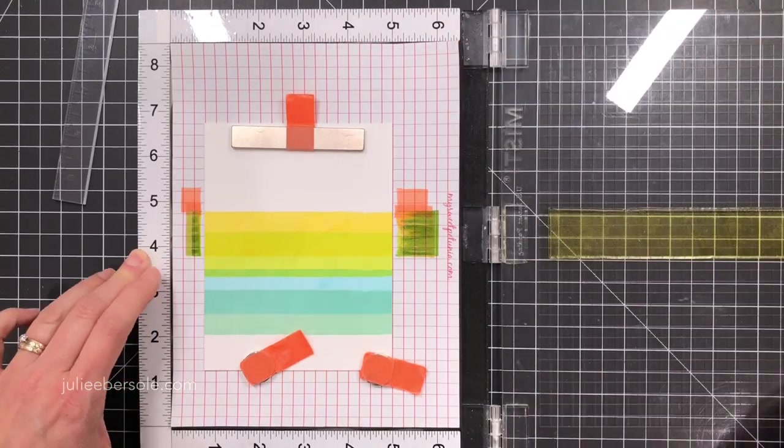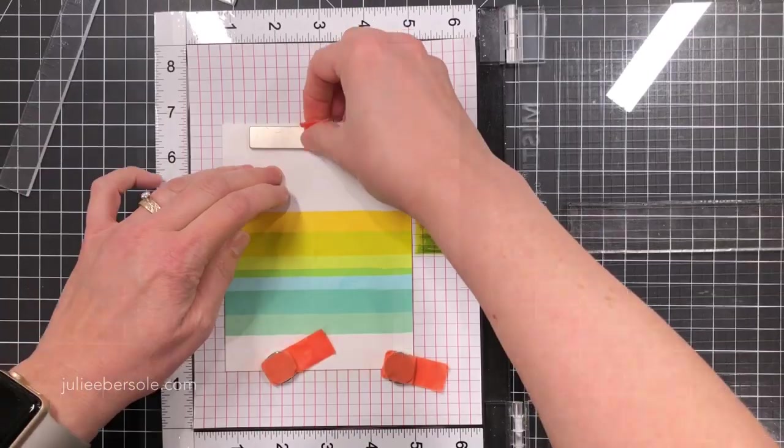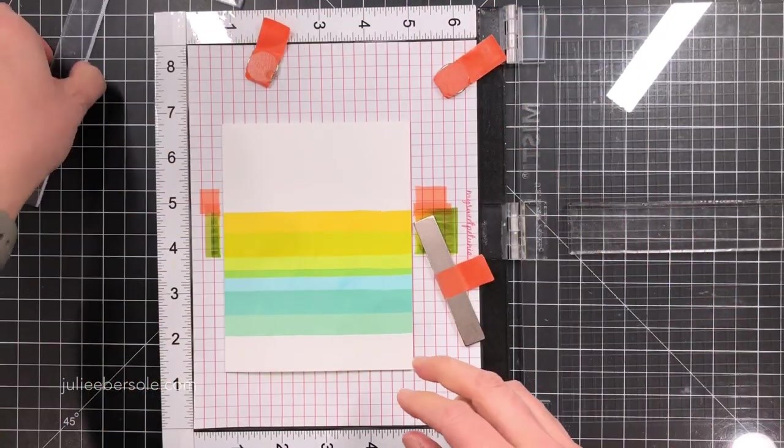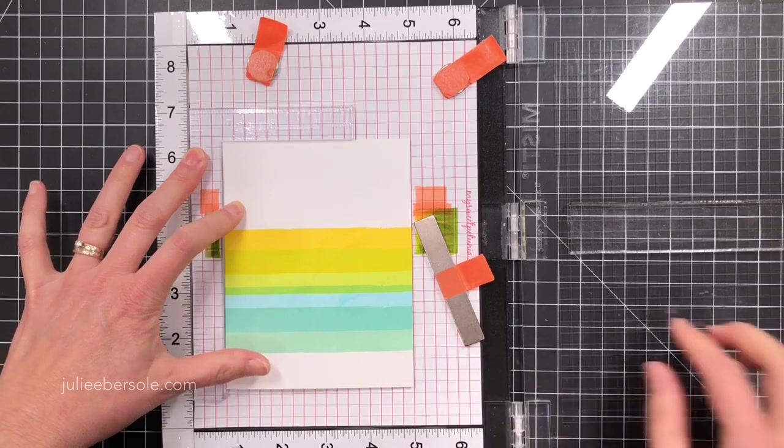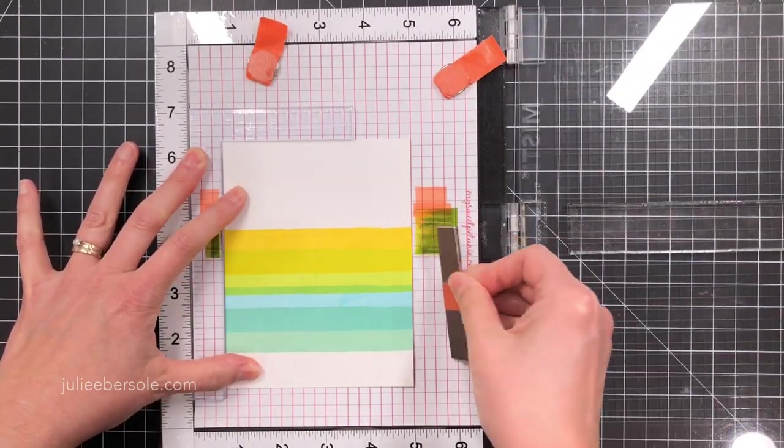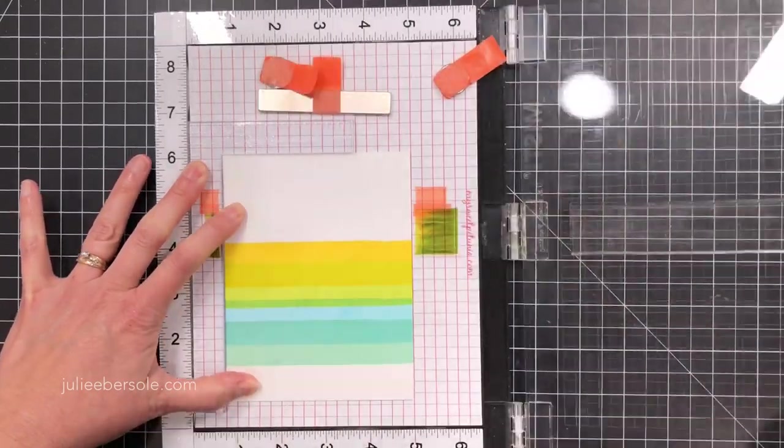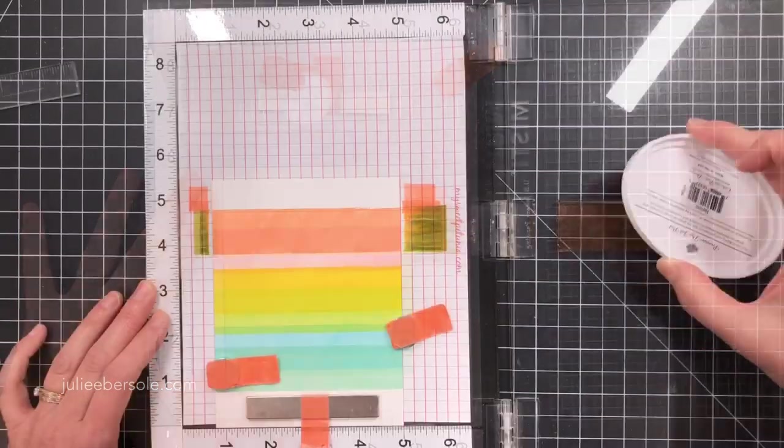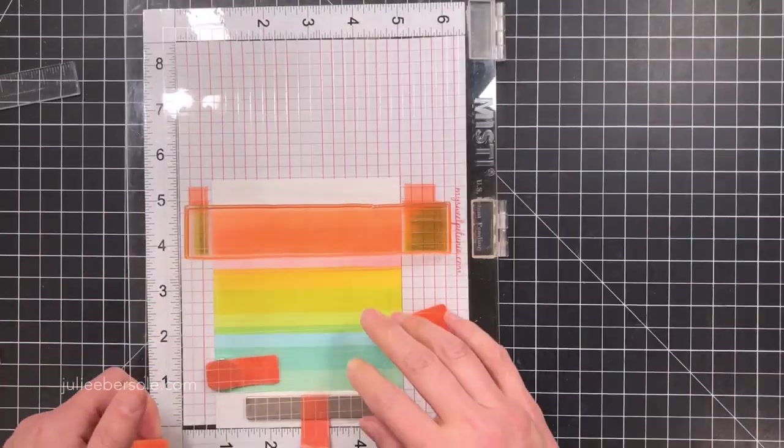Now you might have to finagle a little bit if you wanted to cover the entire card with these rainbow stripes. But I really do like how it looks by having the white gap at the bottom and a white gap at the top. And you'll see why as I finish the card that it looks good and works on this particular design.